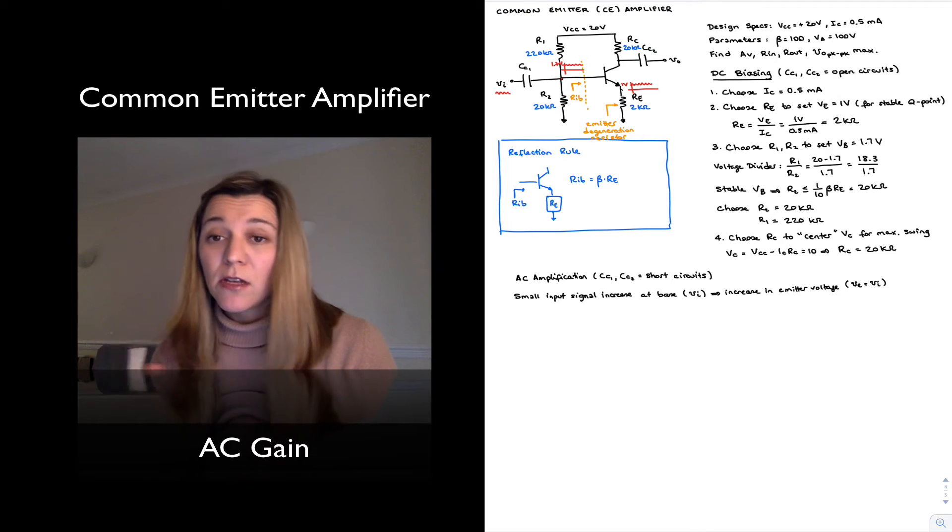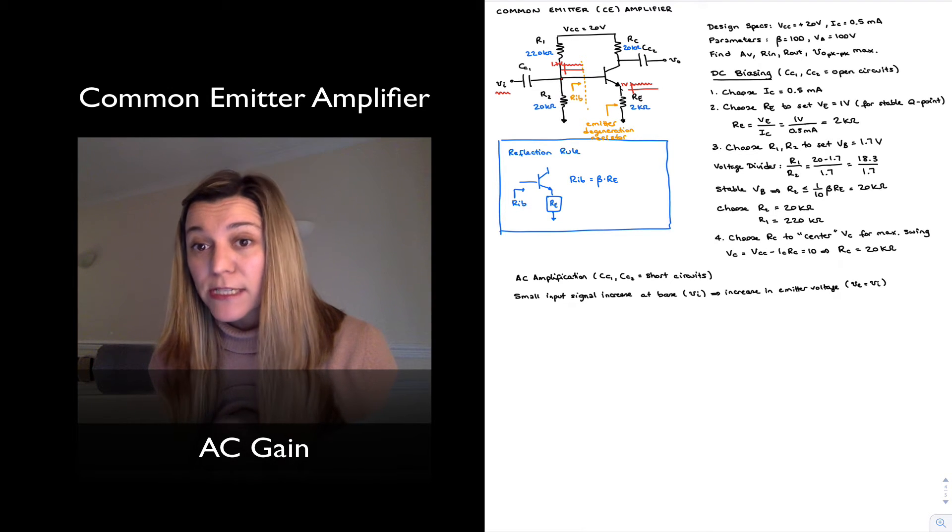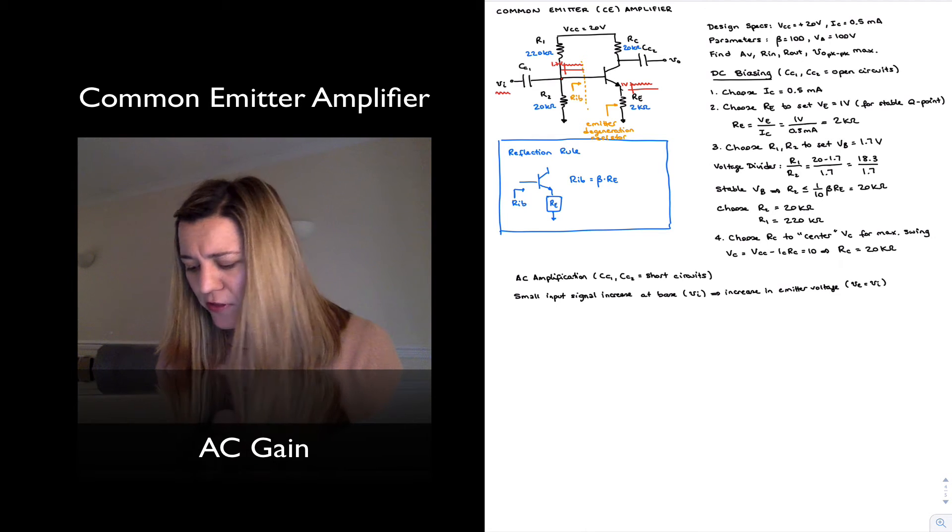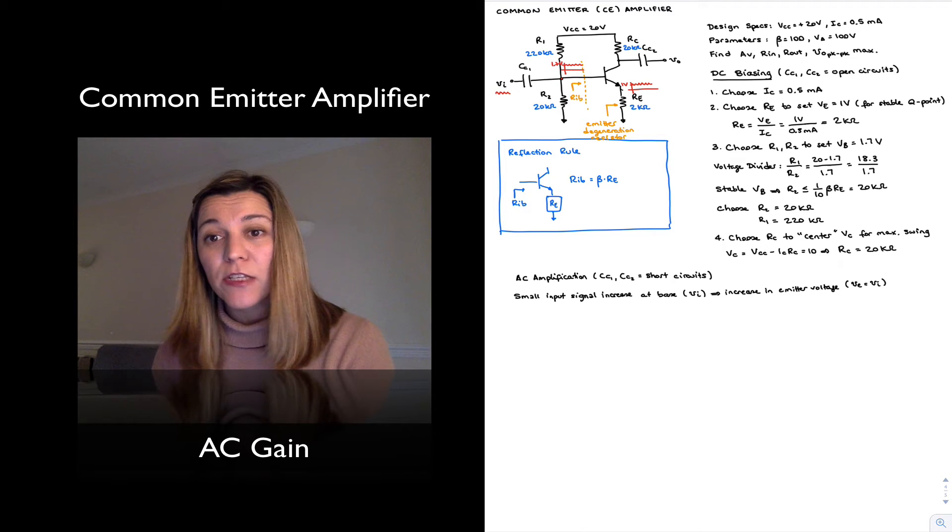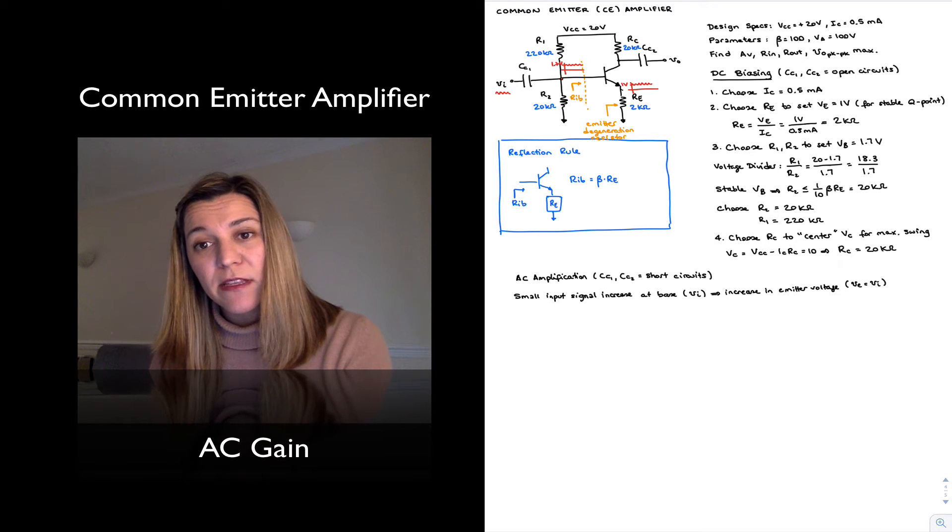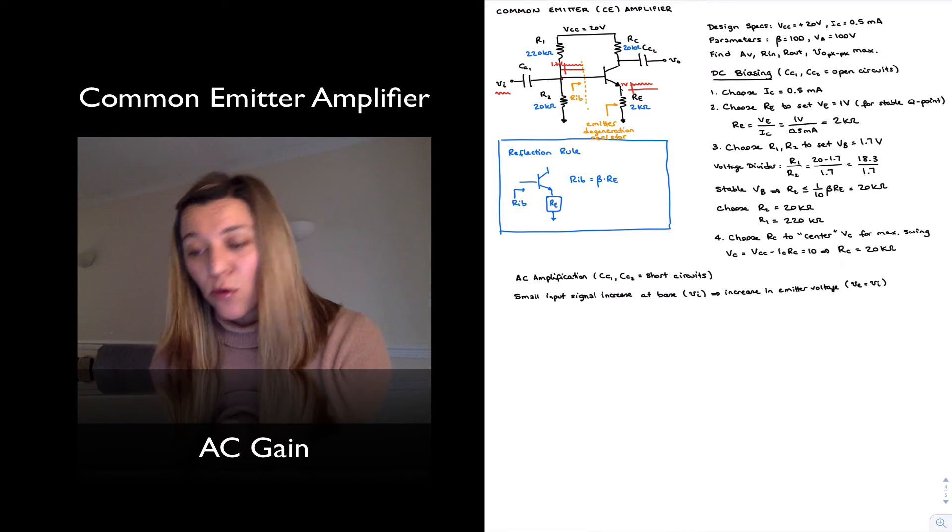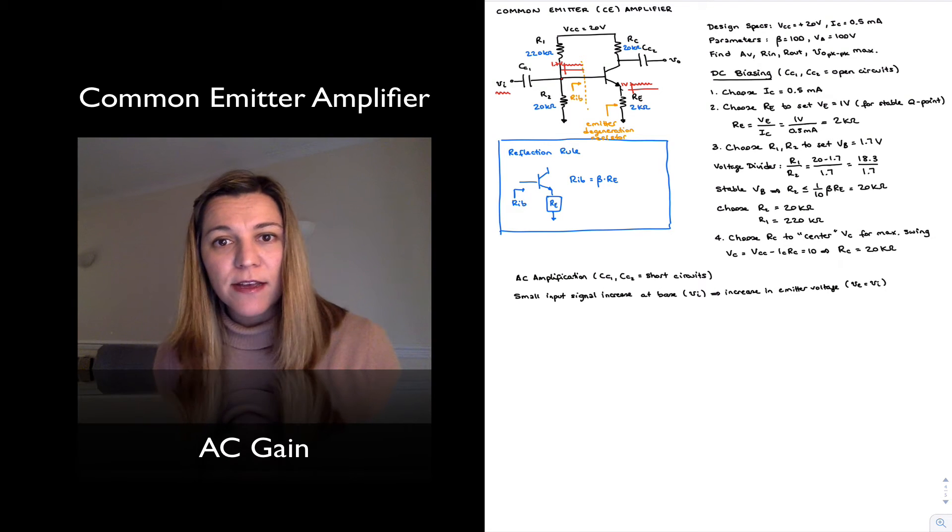Notice that I'm writing lowercase letters, lowercase subscripts. These are referring to small signals. And so you can think of this as deltas. I'm saying there is a delta in the base voltage, which causes a delta in emitter voltage, delta VBE or small case vbe.